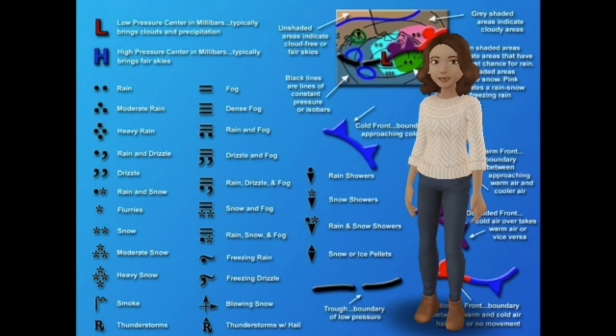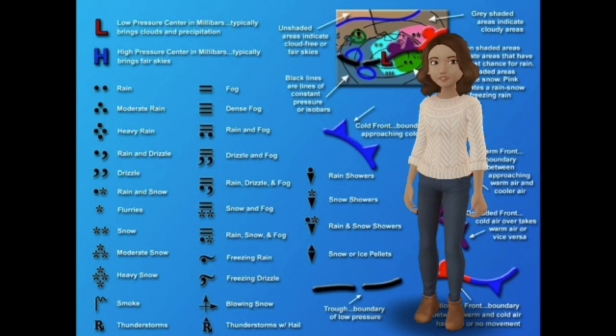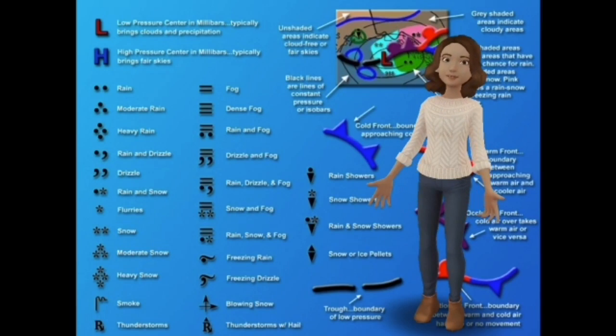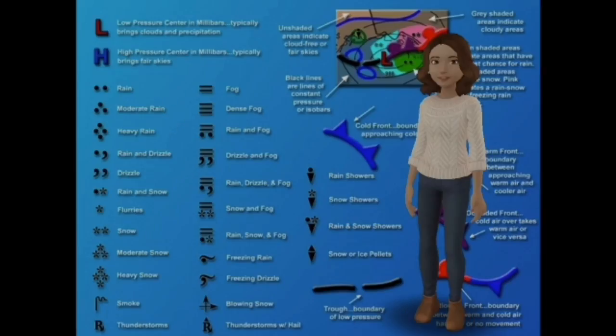On weather maps they have different symbols like a cold front, warm front, stationary front, occluded front, squall line, dry line, and tropical wave.